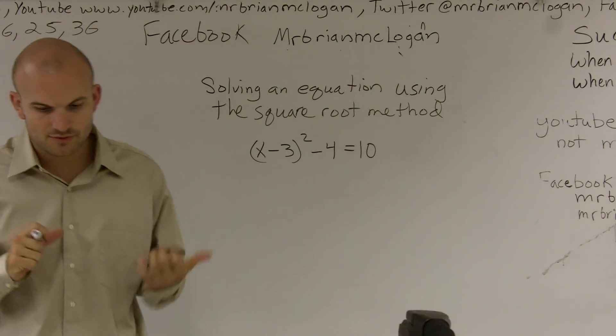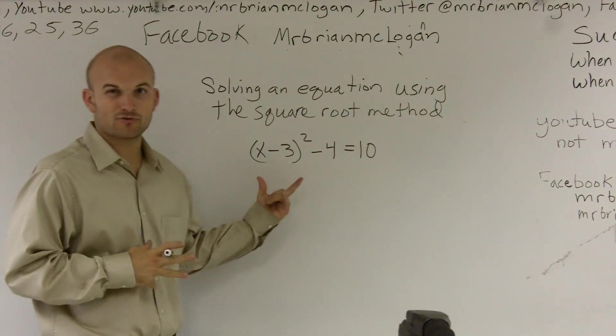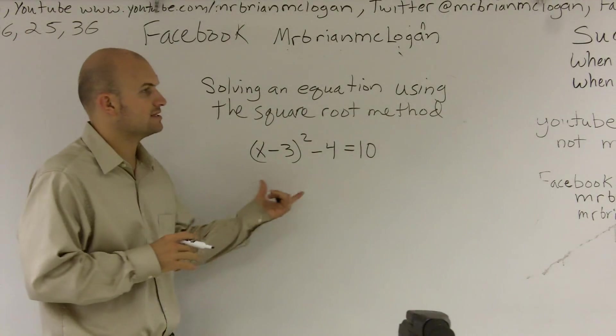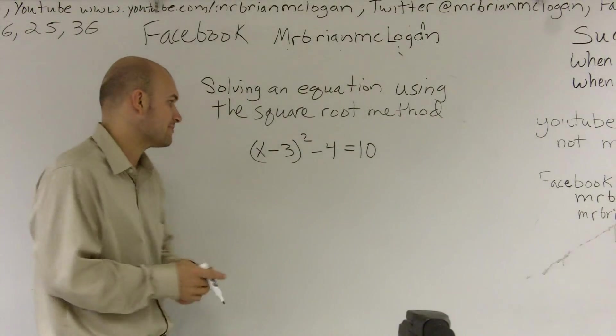So when you're looking at an equation like this and you have a square, the first thing you always want to do is try to isolate the square. Because we know that to get rid of the square, you have to use the inverse operation.